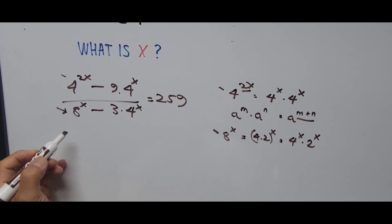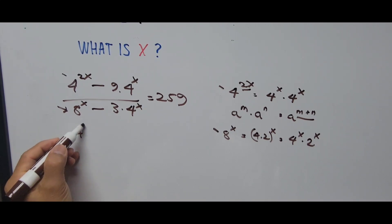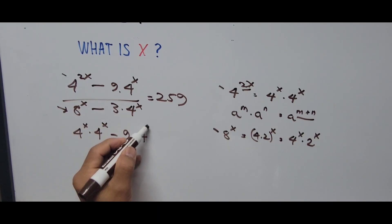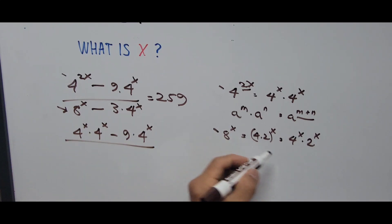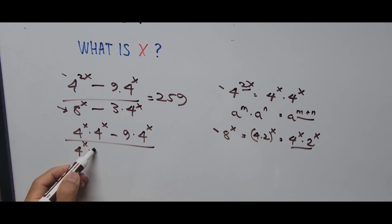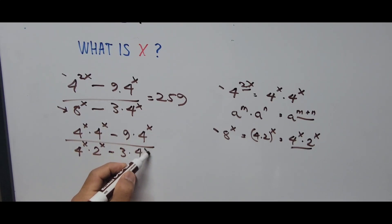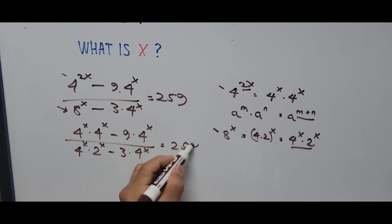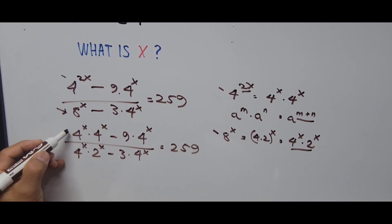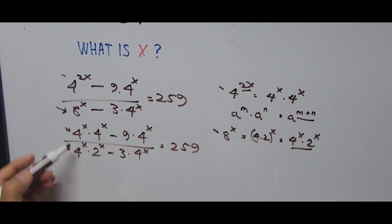Going back, 4 raised to 2x is written as 4 raised to x multiplied by 4 raised to x, minus 9 times 4 raised to x. And 8 raised to x becomes 4 raised to x times 2 raised to x, minus 3 times 4 raised to x, equals 259. We notice 4 raised to x appears in all terms, so it can be factored out.